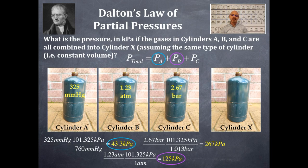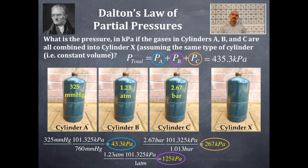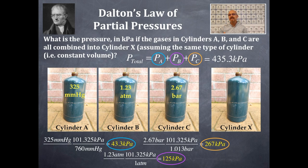Cylinder A, B, and C all now have the same units — kilopascals — so I can sum them. Adding 43.3 + 125 + 267 gives 435.3 kilopascals. Rounding to the fewest decimal places: 125 and 267 both have zero decimal places, so I round to the ones column. The total pressure in cylinder X is 435 kilopascals.